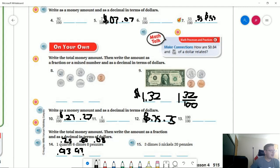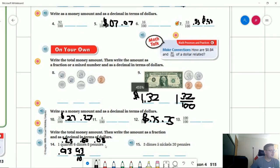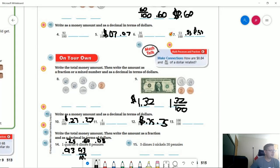If it's a fraction, it would be 93 over 100. And I'm losing the ability to drop that in there. There we go. And then as a dollar amount, 0.93.